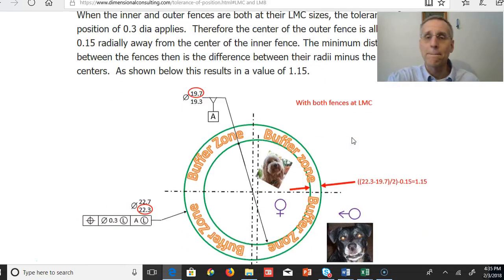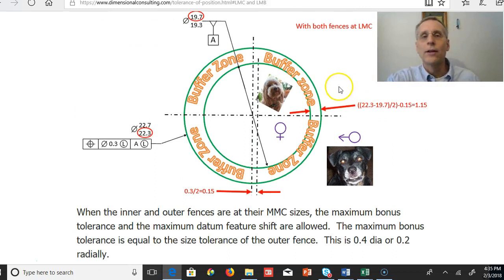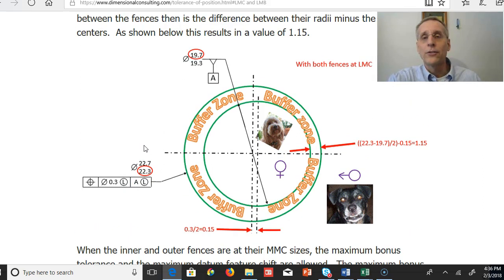So let's see how it works. First of all, we're going to look at what happens when the two fences are at their least material condition, least material boundary, because this 0.3 applies when the outer fence is at its least material condition size and your inner fence is at its least material boundary. Because these two fences were going to consider to be exactly perfectly perpendicular to the ground, the least material boundary is going to end up being the same as the least material condition for the inner fence. That just simplifies things.